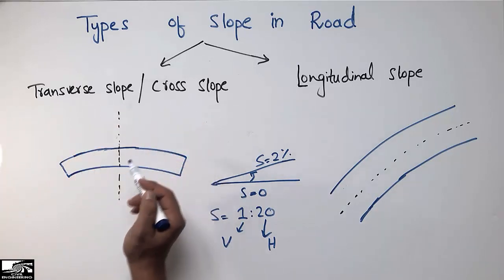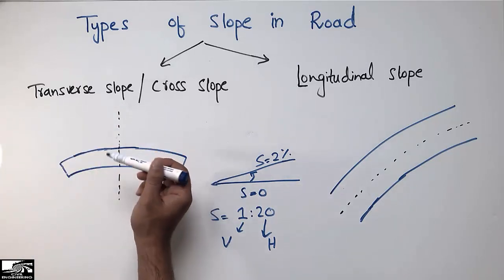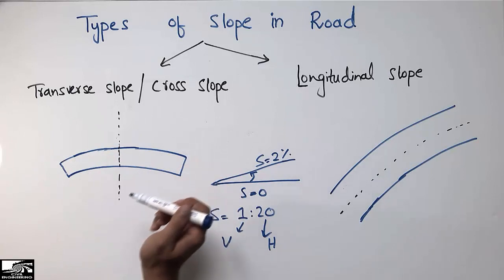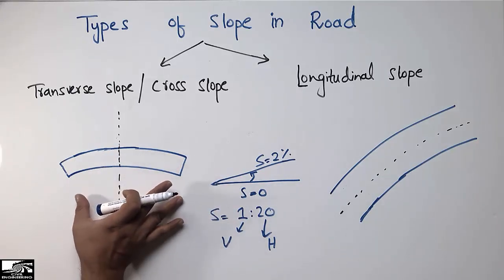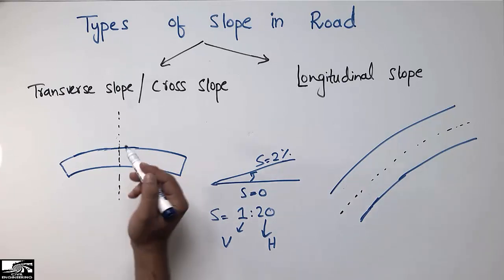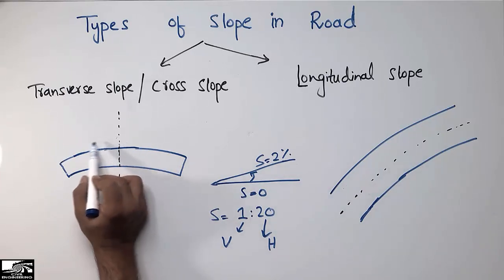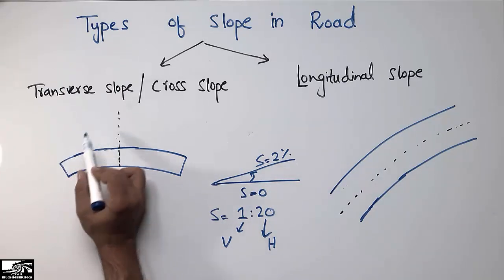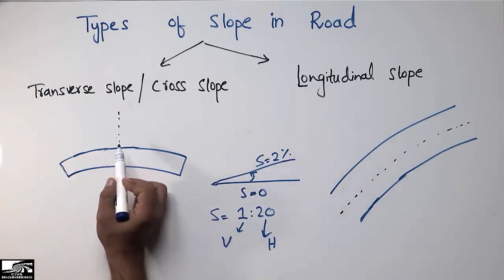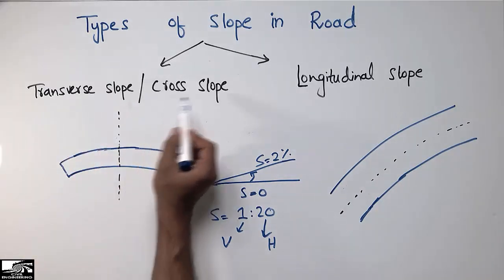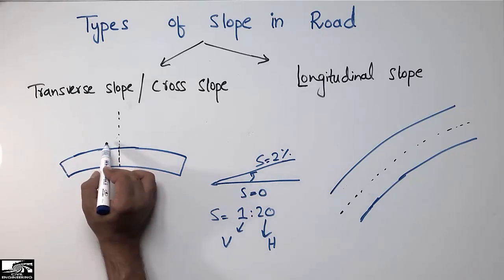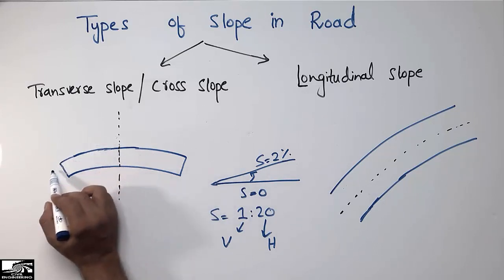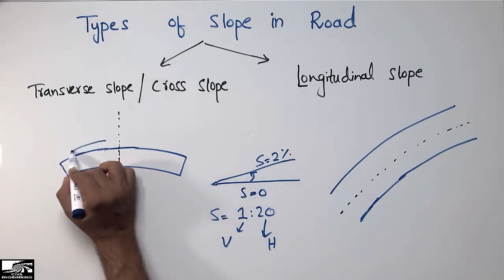The transverse slope, or cross slope, is the slope provided in the transverse direction of the road. If we consider the cross-section of the road, the slope provided in the cross-sectional or transverse direction is called the transverse slope or cross slope. The transverse slope is mainly provided for drainage, to allow rainwater to move from the road surface to the drainage channel on the side.